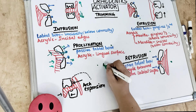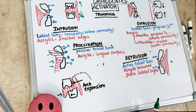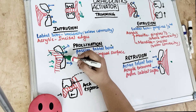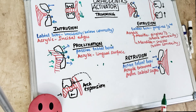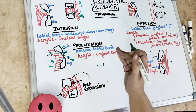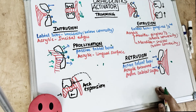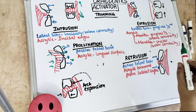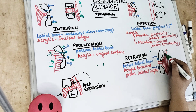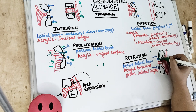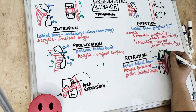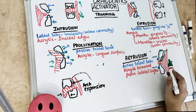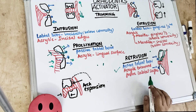For retrusion of incisors, the acrylic is trimmed away from the lingual surfaces and an active labial bow is given. The active labial bow exerts pressure on the teeth, and since there is no acrylic on the lingual side, the teeth retract. Over time the teeth will come back to touch the acrylic. So retrusion occurs when an active labial bow is used together with trimming acrylic away from the lingual surfaces.